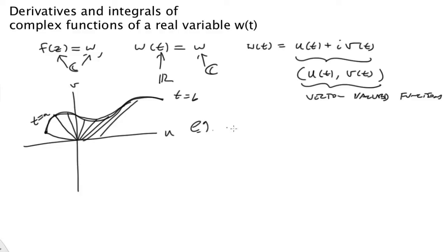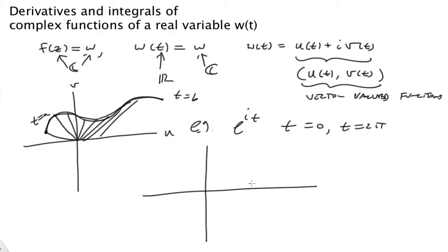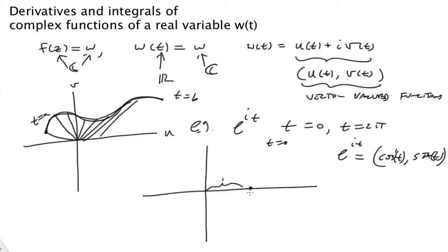Let's talk about a really simple example: e to the it, for t starting at 0 and ending at 2π. So for t equals 0, this function e^(it) is equal to (cosine t, sine t). That simply starts here at (1, 0). And as time goes forward, by the time we get to t equals π/2, we've gone to the top of the circle, and it simply traces out the unit circle.